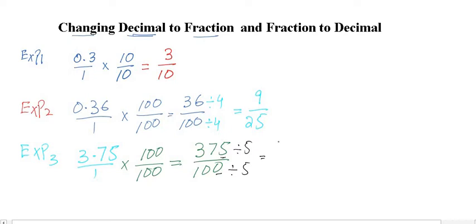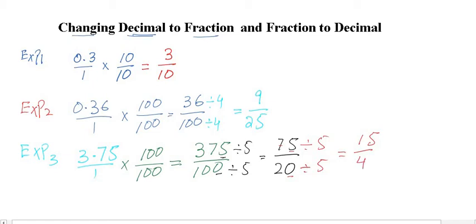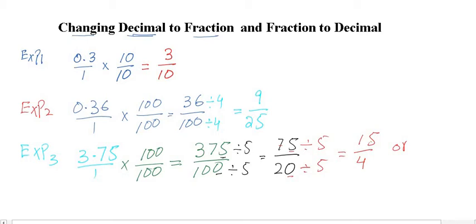We get 75 over 20. Still, since there is a 5 or 0, it must be a multiple of 5, so we divide top and bottom by 5 again until we reach the simplest form, giving us 15 over 4. This is an improper fraction; you can write it as a mixed number. 3 times 4 equals 12, and 12 plus 3 equals 15, so the answer is 3 and 3/4.